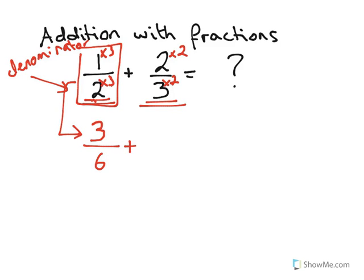Then we do the same thing with our two-thirds. Two times two is four. Three times two is six. So now I have the same numbers down here. We'll have a six here and I have a six here. Now I can add my fractions.